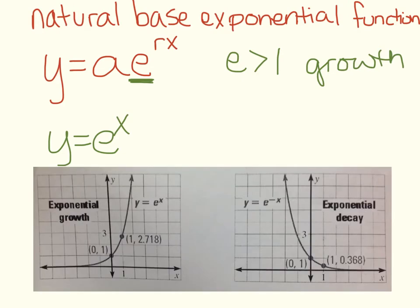Here's what Y equals E to the X looks like when you graph it. I actually included a growth and decay for you to look at. The growth is the one on the left, Y equals E to the X. We have our asymptote at Y equals 0, just like always. We have our point at 0, 1.